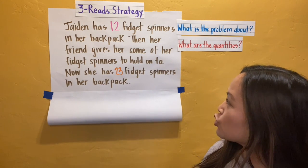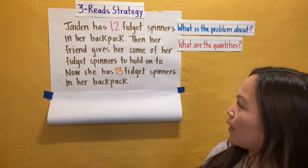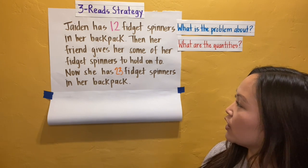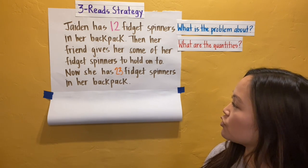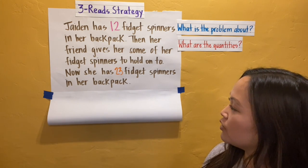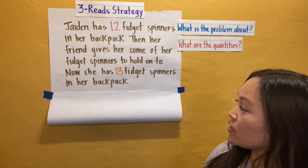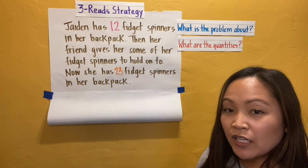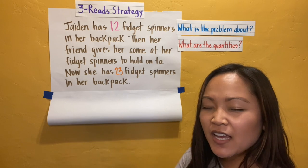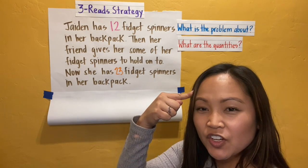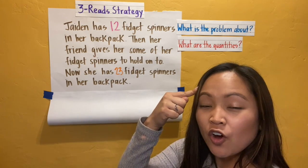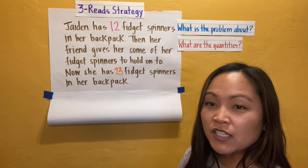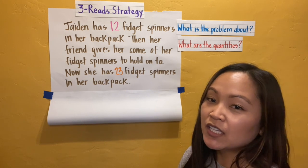Jaden has 12 fidget spinners in her backpack. Then her friend gives her some of her fidget spinners to hold on to. Now she has 23 fidget spinners in her backpack. I want you to think in your head, or you can say it out loud to yourself — what are the quantities in this problem?